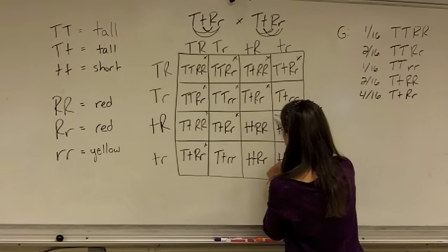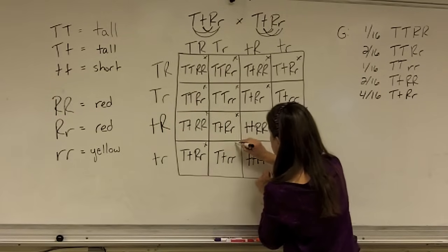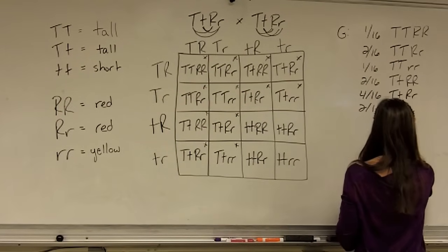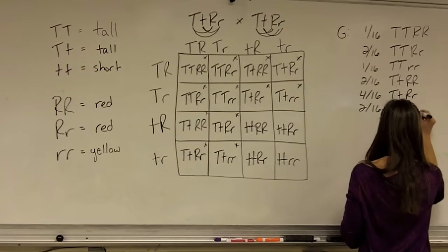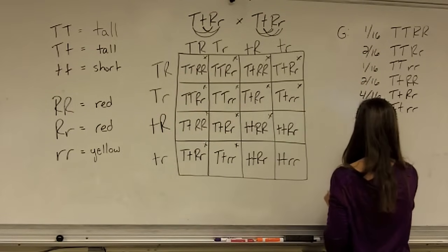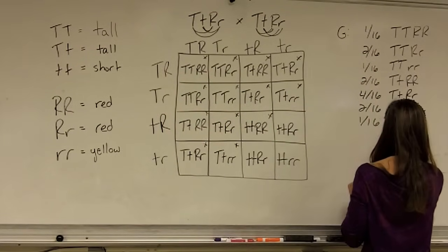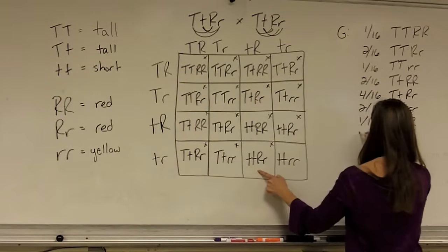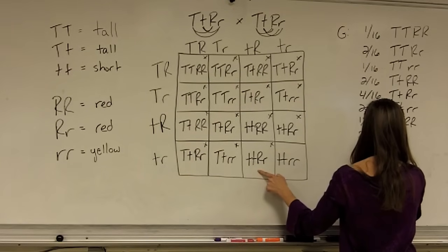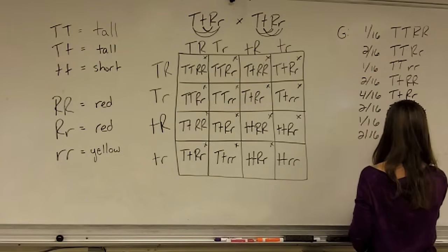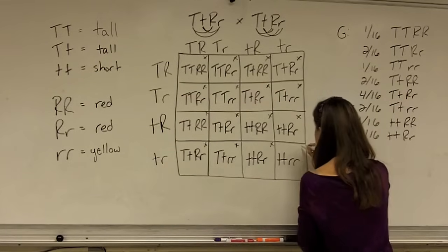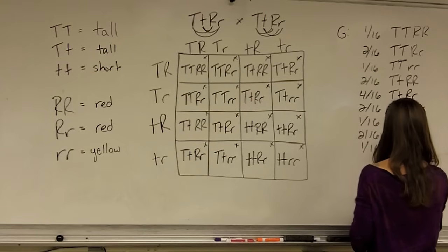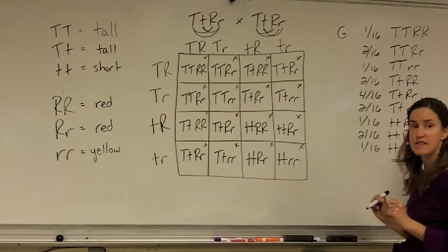Continuing to work down and to the right, I'm going to have two sixteenths, big T, little T, little R, little R. One sixteenths, little T, little T, big R, big R. Two sixteenths, little T, little T, big R, little R. And one sixteenths, little T, little T, little R, little R, the most recessive possible combination.